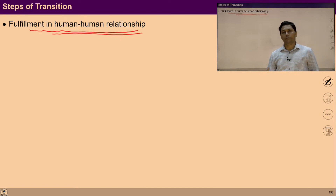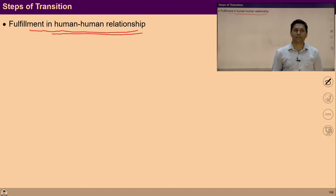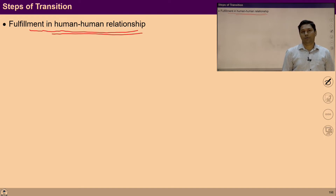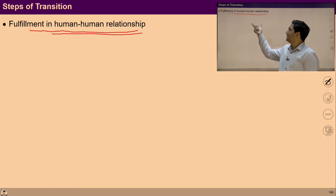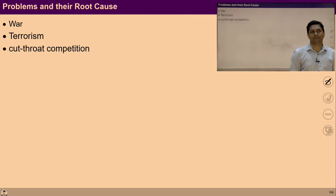We are trying to master nature and exploiting it unknowingly, and its outcome is resource depletion, pollution, global warming, etc. So ask yourself: what is your natural desire, what is your natural acceptance? Do you want to be in this present state as a society, or do you want to be in a different state?